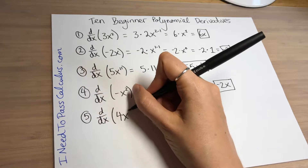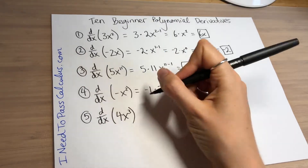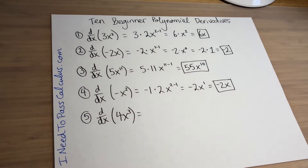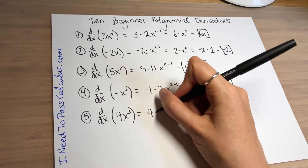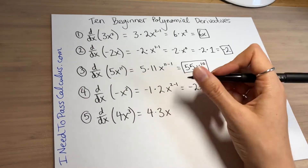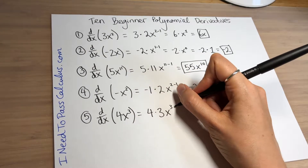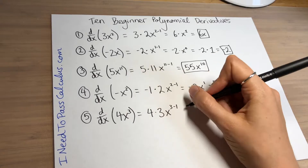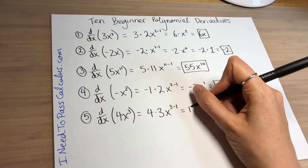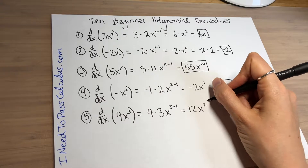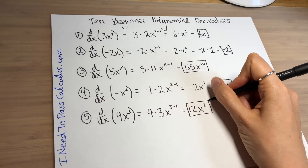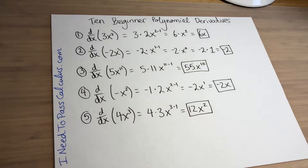Problem number 5: let's take the derivative of 4x cubed, or 4x to the third power. The 4 out front goes along for the ride, the 3 from the exponent comes down to join the 4, and you subtract 1 from the exponent — 3 minus 1 is your new exponent. So 4 times 3 gives you 12 out front and you have 12x squared.